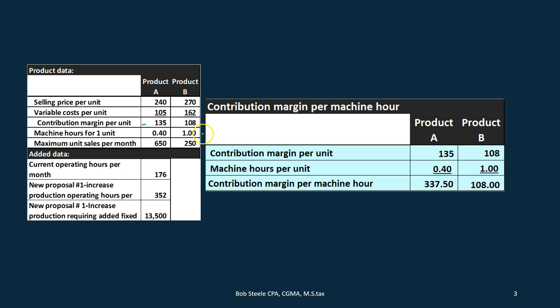In this particular problem, both the contribution margin per unit and the contribution margin per machine hour are higher for A than for B. But be aware that may not always be the case in other scenarios — it's quite possible that the rankings differ between these two measures. When there's a constraint, we generally want to prioritize by contribution margin per machine hour.